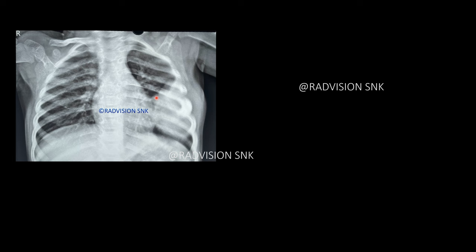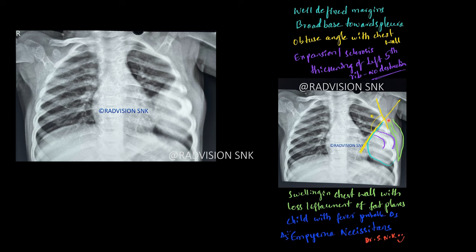Next case: a child presented with fever and swelling in the chest wall. You can see a radiopaque shadow noted against the chest wall with a broad base towards the chest wall, and there is soft tissue swelling within the chest wall. There is typical sclerosis of the left fifth rib — sclerosed with no destruction as such. Drawing a line along the mass and along the rib cage, you can see it forms an obtuse angle. This obtuse angle helps in differentiating this as an extra-pulmonary or pleural-based mass rather than a lung mass.